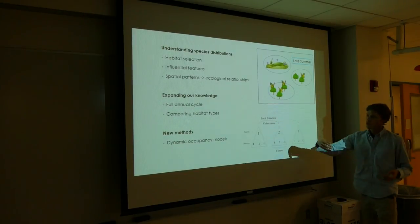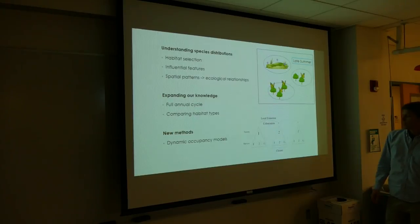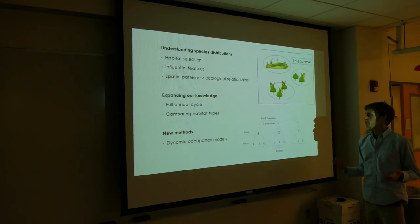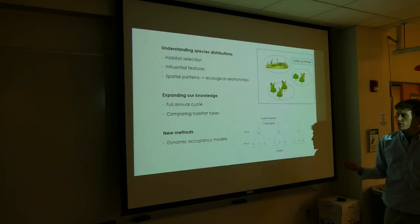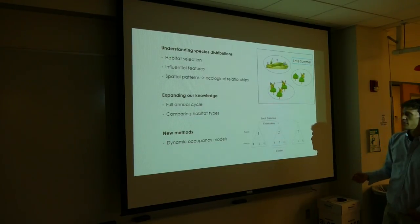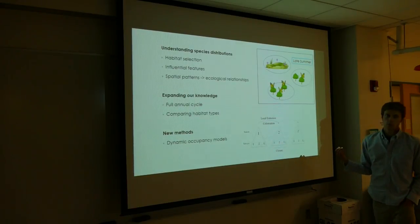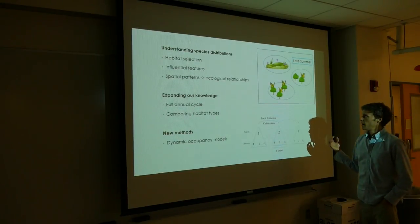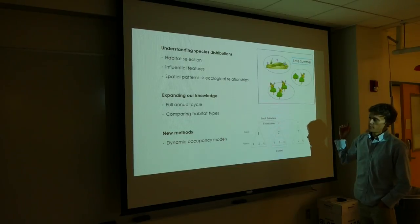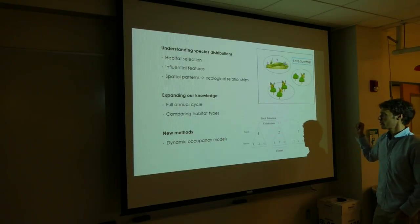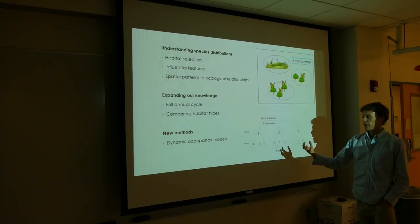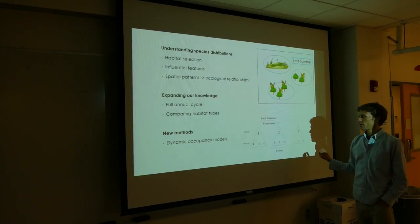In order to include information on different seasons and compare habitat types and increase the complexity of our work, we need new methods. Fortunately, there's been a lot of advances in species distribution models that allow us to incorporate information from habitat features into a model that can explain changes in distribution across seasons.